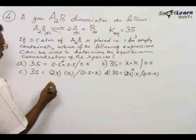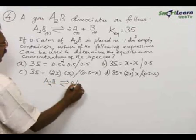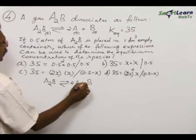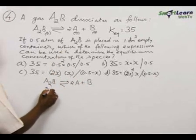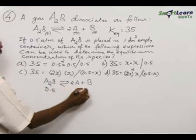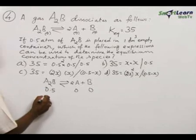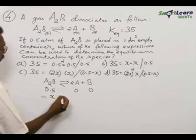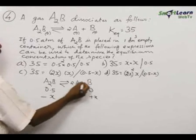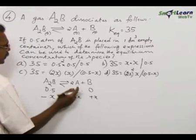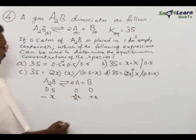In the equation A₂B dissociates into 2A plus B. As per the problem, we have taken 0.5 initially, and here is 0, 0. Now, out of 0.5, imagine x reacts. Therefore, minus x, then here it is plus x. As per the stoichiometry of the equation, you must write here plus 2x because here 2A, so plus 2x.